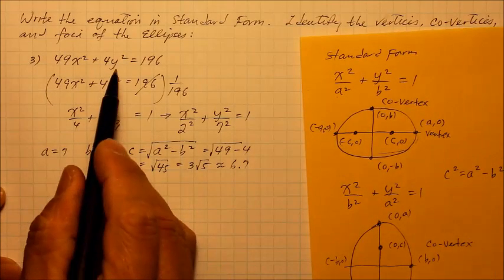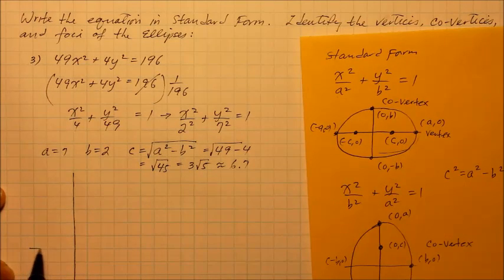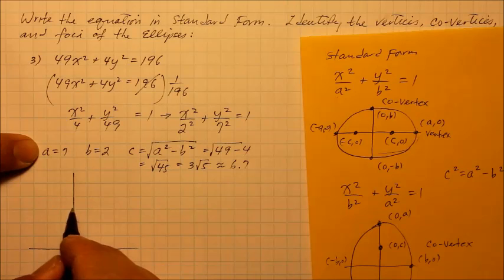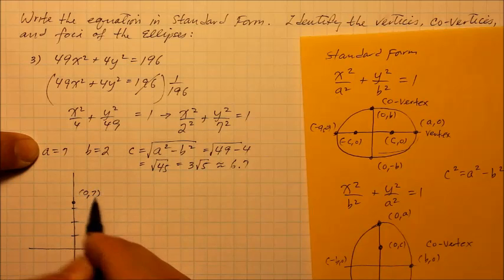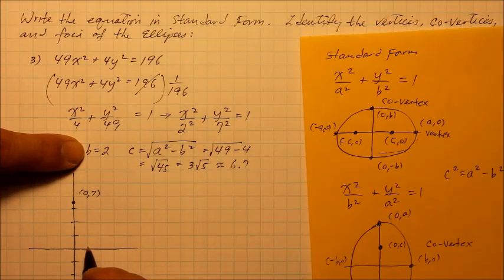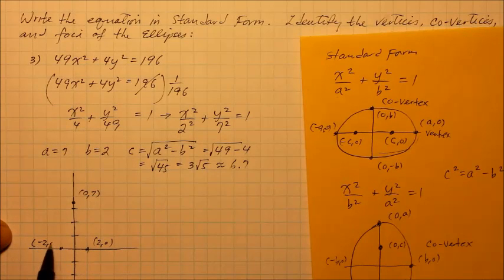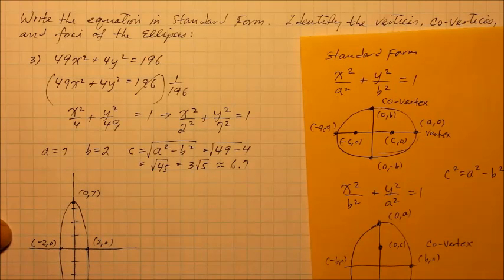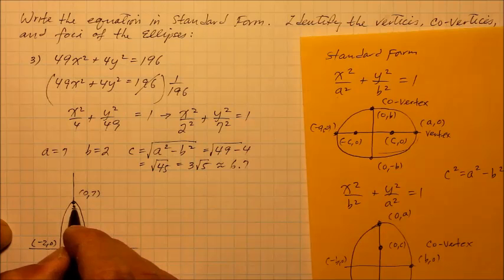So approximately 6.7. Since the y squared has the bigger number which that becomes, it's going to be a vertical major axis. So coordinates 0 and 7, 2, 4, 6, and 7, 2, 4, 6 and negative 7 over there. So 0 and positive 7, 0 and negative 7. And my co-vertices are 2 and 0 right there, then on the left side negative 2 and 0. And I'm going to go ahead and sketch my ellipse.